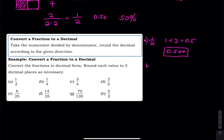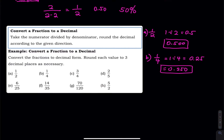Part B is 1 over 4, which is a quarter. That equals 1 divided by 4, which is 0.25. If you want to keep one more decimal place, simply add a 0 on the right-hand side of the 5, giving 0.250.